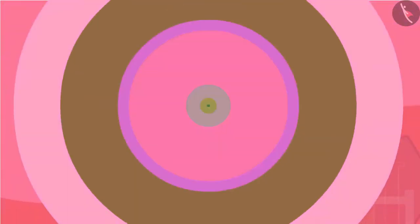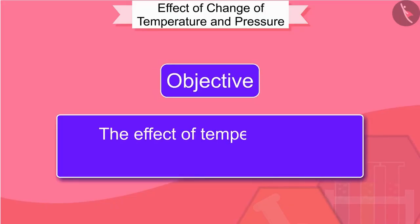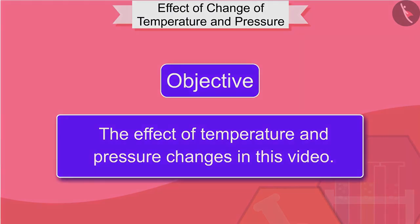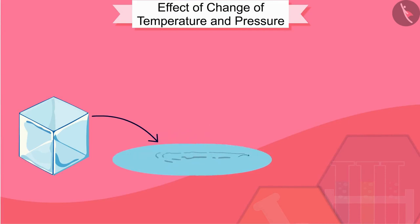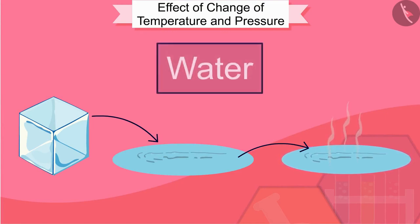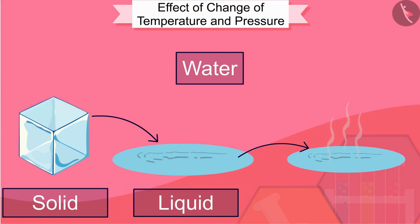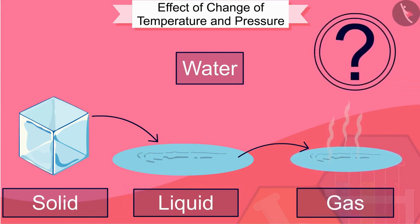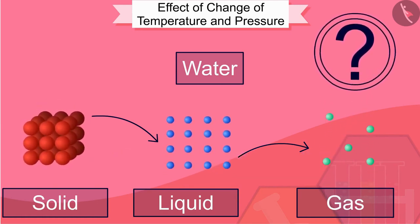In the previous video, we studied the state of matter. Let us now study the effect of temperature and pressure changes in this video. You must have seen ice melting in water and seen water changing into water vapor on heating. From these observations, we can say that water can exist in three states of matter: solid, liquid, and gas. But have you ever thought about what happens inside matter when the state changes? What effect does the change of state have on the particles of matter? Let us try to find the answers to these questions in this video.